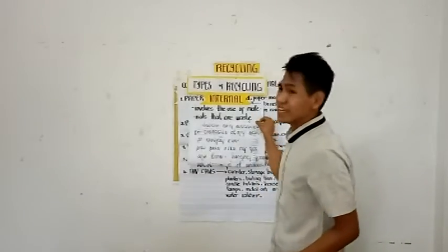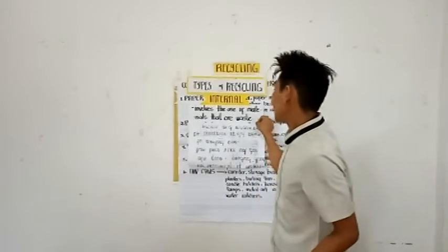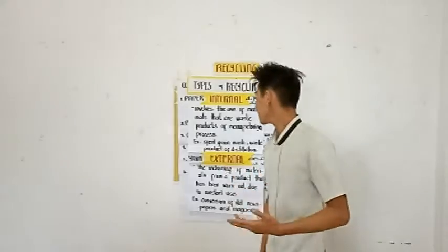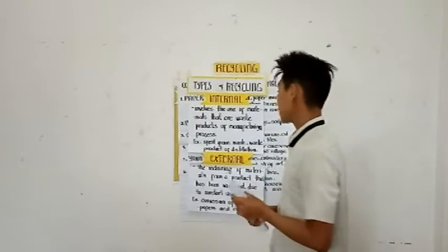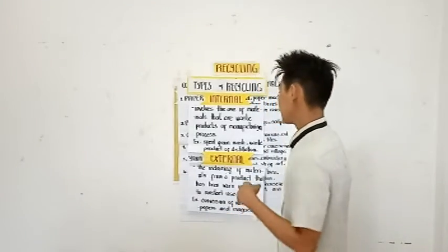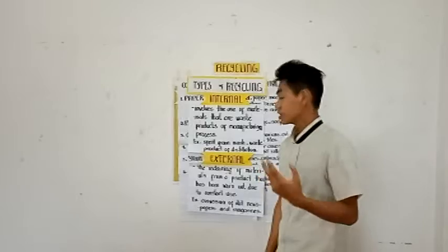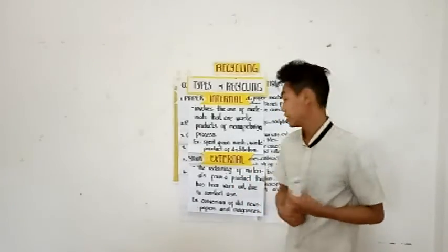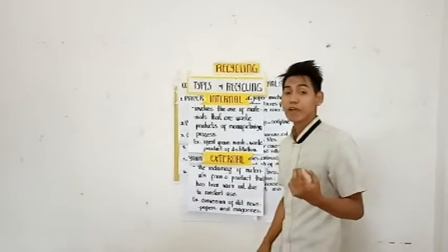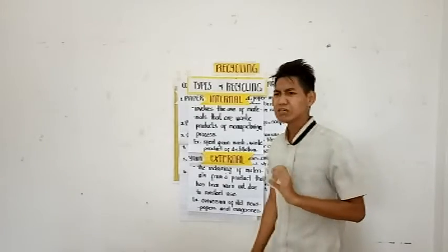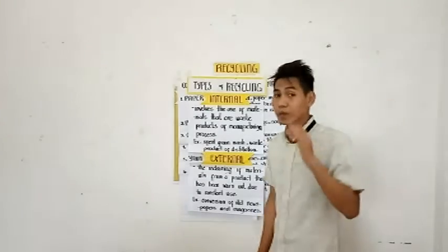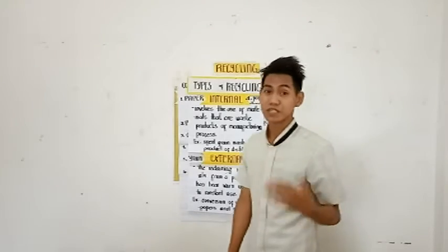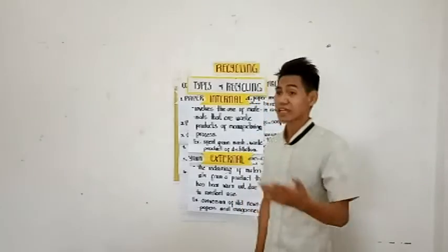When we say internal recycling, it involves the use of materials that are waste products of manufacturing processes. For example, the spent grain mush is a waste product of distillation. Also, in a rice granary, there are tiny thrown-away pieces of rice. These could be used as livestock feeds or cattle feeds.